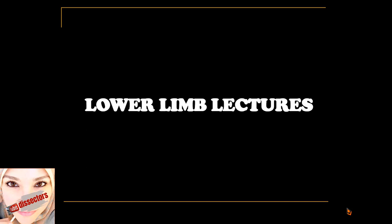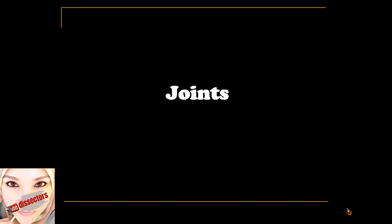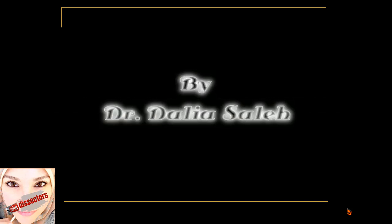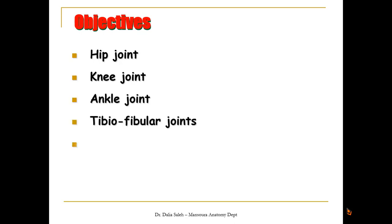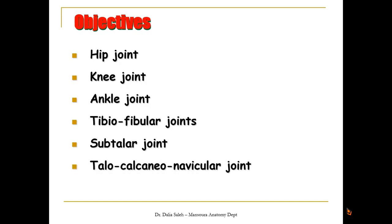To carry on with the lower limb lectures, I'm going to cover in this presentation the anatomy of the joints of the lower limb. I'm Dr. Dalia Saleh, professor and head of the anatomy department at Mansoura University, Egypt. In this presentation we're going to cover the anatomy of the hip joint, the knee joint, the ankle joint, the tibiofibular joints, the subtalar, the talocalcaneonavicular joints, and also the small foot joints. I will focus on the anatomy of the three big joints of the lower limb: the hip, the knee, and the ankle.